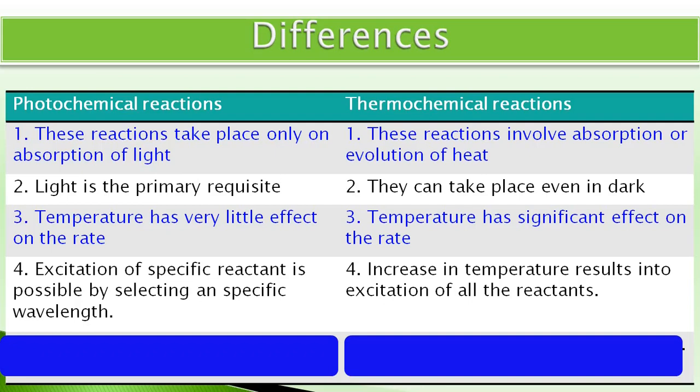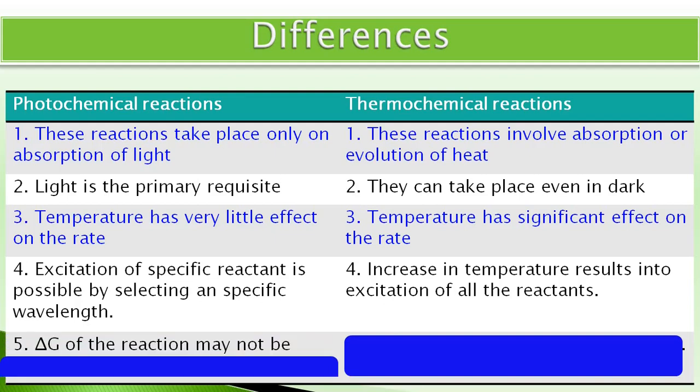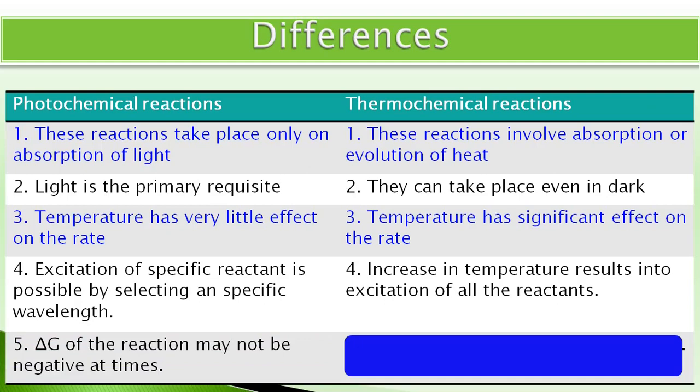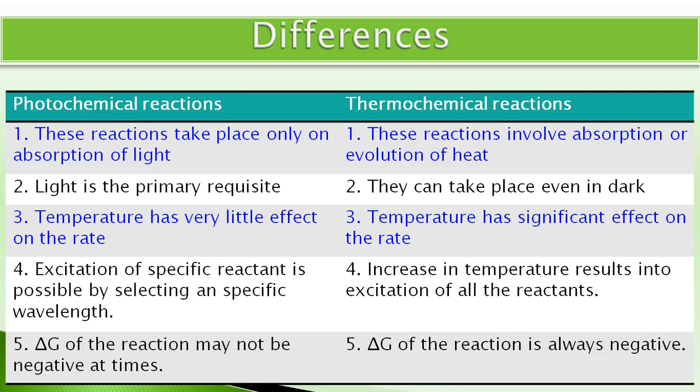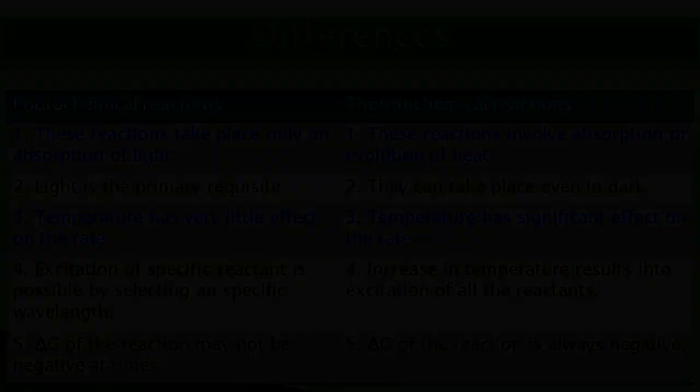Or in sabke alawah, ek or important difference hai, woh difference hai, ki photochemical reactions ki change in Gibbs energy kabhi-kabhi positive bhi ho sakti hai. And in other words, delta G of photochemical reactions may not be negative all the times. It may be positive at times. Jabki, thermochemical reactions me, koji bhi aasi thermochemical reactions nahi hooti hai, jiske liye delta G positive hooti ho. Delta G of a thermochemical reaction is always negative. So, these are the five basic differences between photochemical reactions and thermochemical reactions.